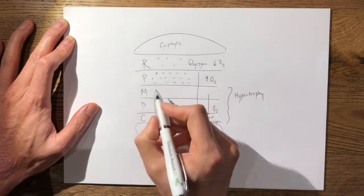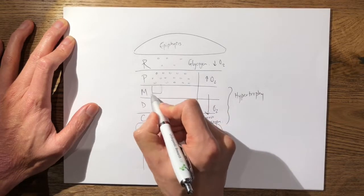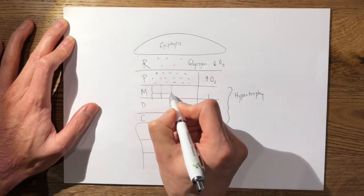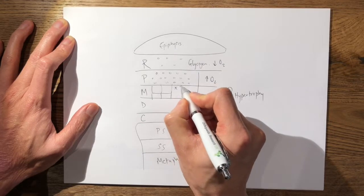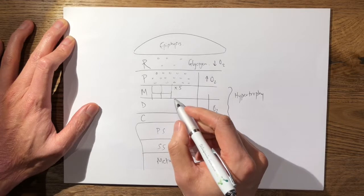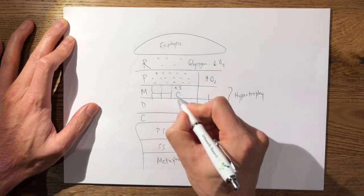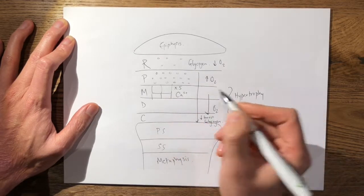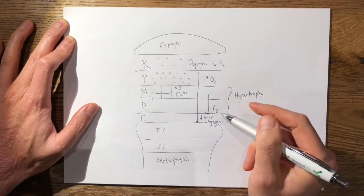Then these chondrocytes start to increase in size, and as they increase in size they actually increase five-fold in size and they start to accumulate calcium in their extracellular matrix.